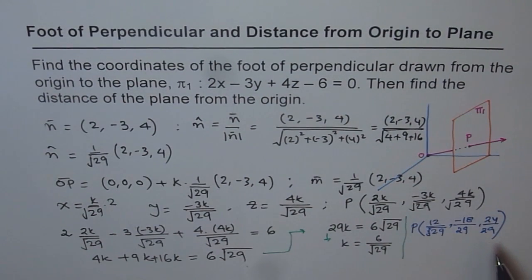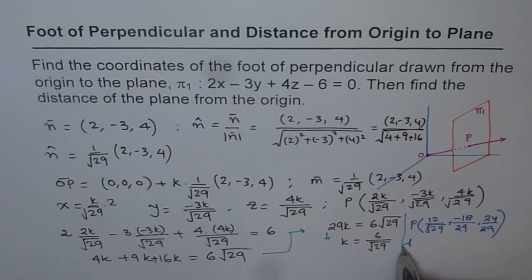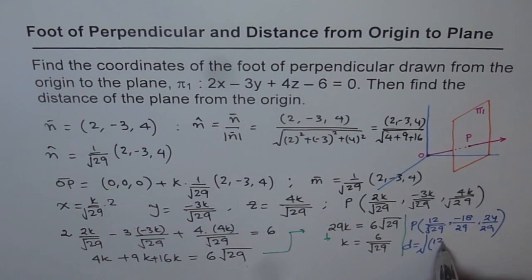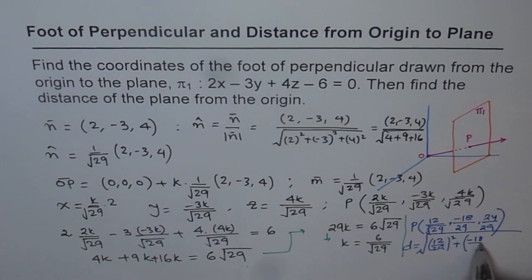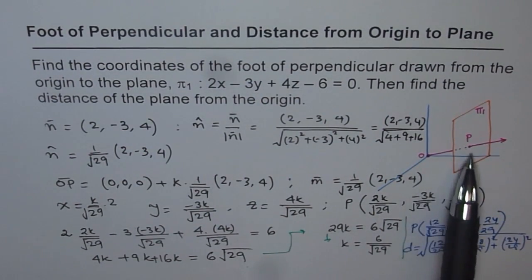To find the distance from origin to point P, we use the distance formula: distance = √((12/29)² + (-18/29)² + (24/29)²). That gives the distance from the origin to the plane.